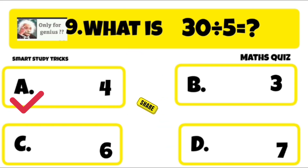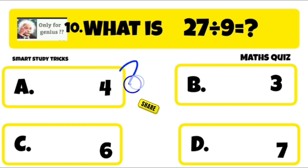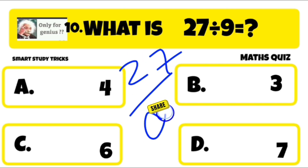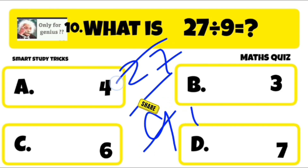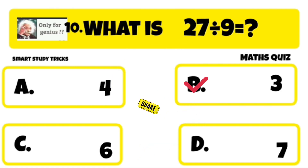Quiz number 10 is: what is 27 divided by 9? 27 divided by 9 is equal to 3. Right answer is B: 3.